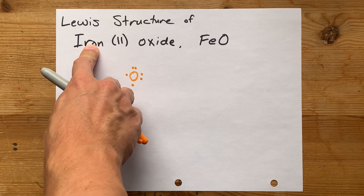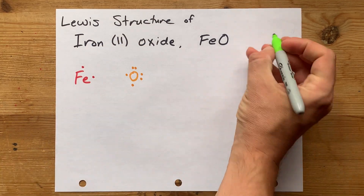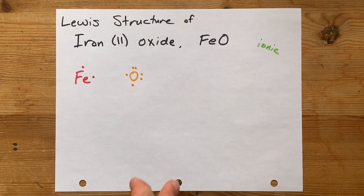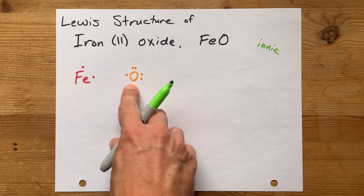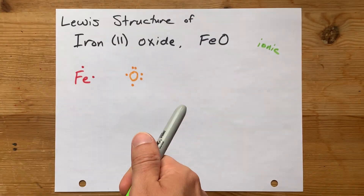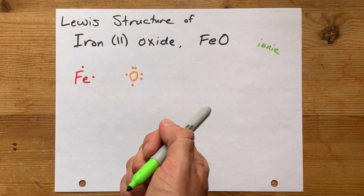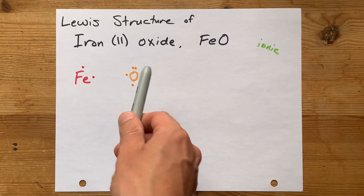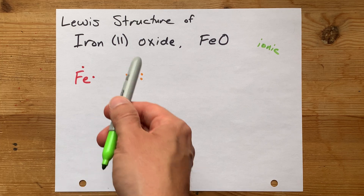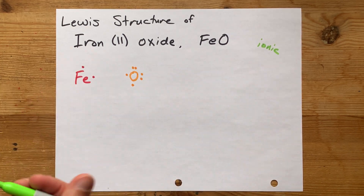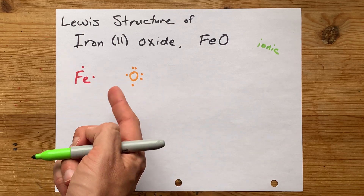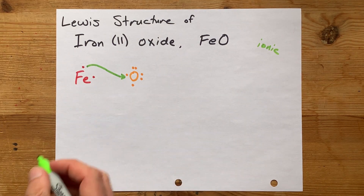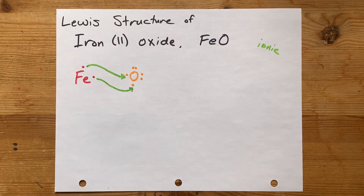A metal plus a non-metal is always going to make an ionic compound, which is a transfer of electrons from metal to non-metal. Specifically, the non-metal oxygen will want a complete or full outer shell of eight electrons — that's the octet rule. Currently it has six, so it needs two extra electrons in order to have that complete octet. Lucky for us, this iron already has two electrons that it wants to get rid of. So I'm going to draw an arrow to show that electron being paired with that one, and an arrow to show that electron being paired with that one.